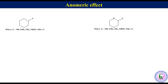amine, alkyl sulfide, chlorine, etc. We know that the most stable conformation of monosubstituted cyclohexane is the chair conformation having the substituent at the equatorial position.